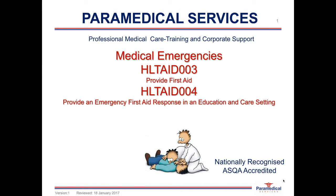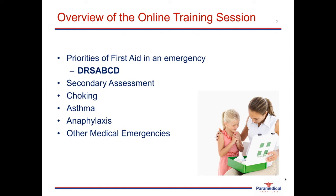In the overview of the online training session, the topics discussed today include priorities of first aid in an emergency, conducting our primary survey or DRS-ABCD, then conducting a secondary assessment and assessing the patient's vital signs. We will look at how to recognize an upper airway obstruction or choking and how to manage it. Following that, we will have an in-depth look at asthma and anaphylaxis, and to conclude, other types of medical emergencies.